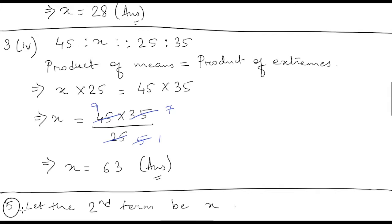Similarly, in number four we have 45 is to X is in proportion with 25 is to 35. Again, we are going to follow the same process: product of means is equal to product of extremes. So we get X into 25, because these two are in the means.